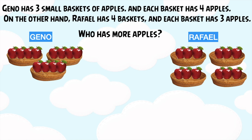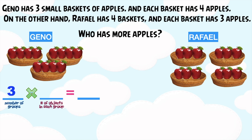Let's count the number of apples of Gino and Raphael using the multiplication sentence. For Gino, the first factor is the number of groups, so we have three. The second factor is the number of objects in each group — how many apples do we have in each basket? We have four. So the total number of apples: Gino has 12 apples.